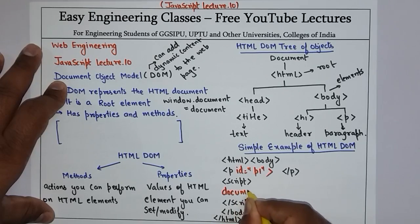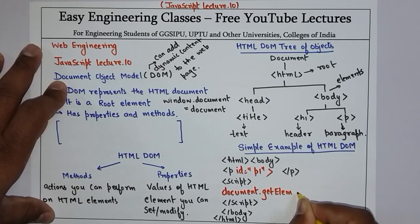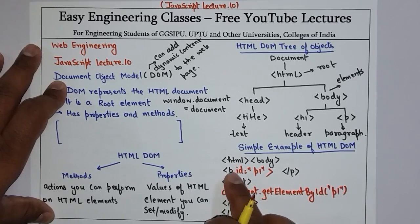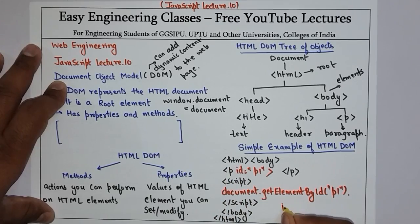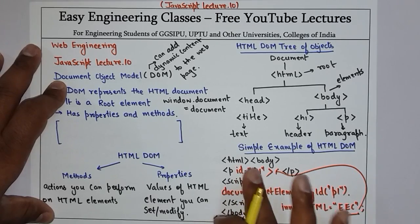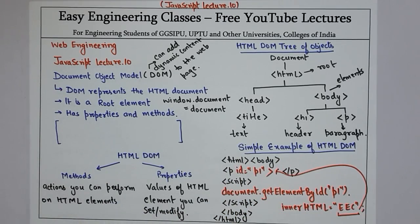Script के अंदर value set करने के लिए: document.getElementById — यह एक method है जो आपको call करना है — और id कौनसा use करेंगे, p1। तो अब इसमें इस paragraph का instance आ गया जिसका id था p1। और value set करने के लिए dot innerHTML is equals to 'EEC' for example। So now the value 'EEC' will be set in this paragraph — based on the id of the paragraph element। तो यह basic example था कि कैसे हम DOM को use करके dynamic content create कर सकते हैं।